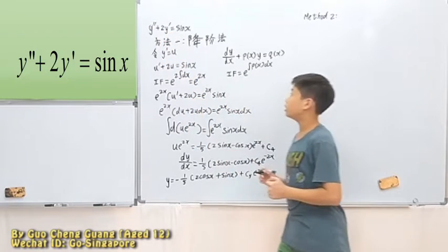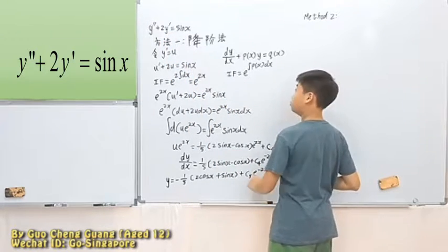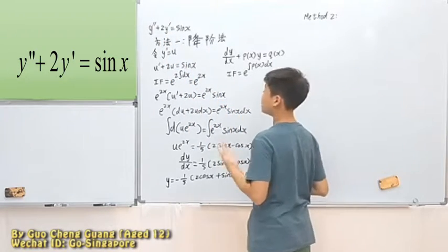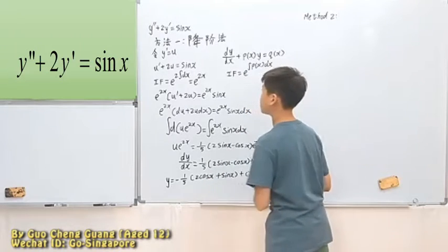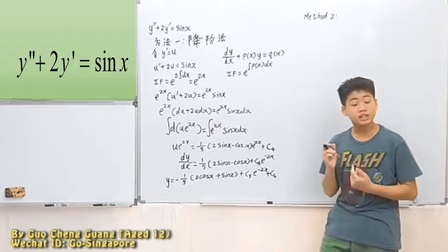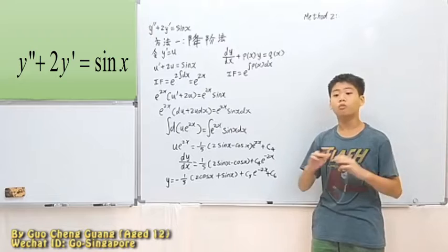First order, second order, constant coefficients, linear, non-homogeneous. But wait, what if we consider a homogeneous case?